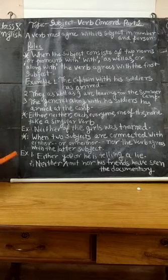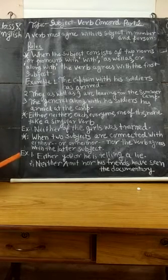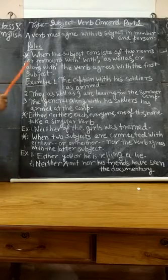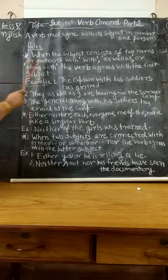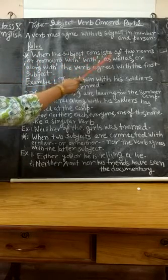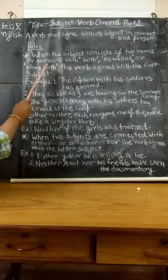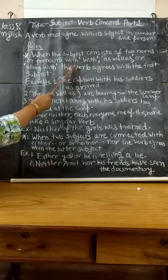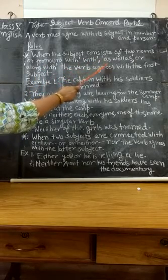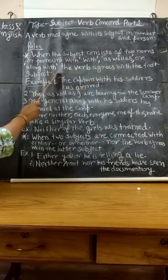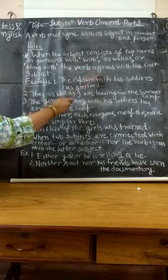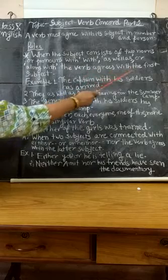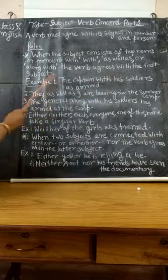A verb must agree with its subject in number and person. Now we will see the rules when the subject consists of two nouns or pronouns with 'as well as' or 'along with' — the verb agrees with the first subject.